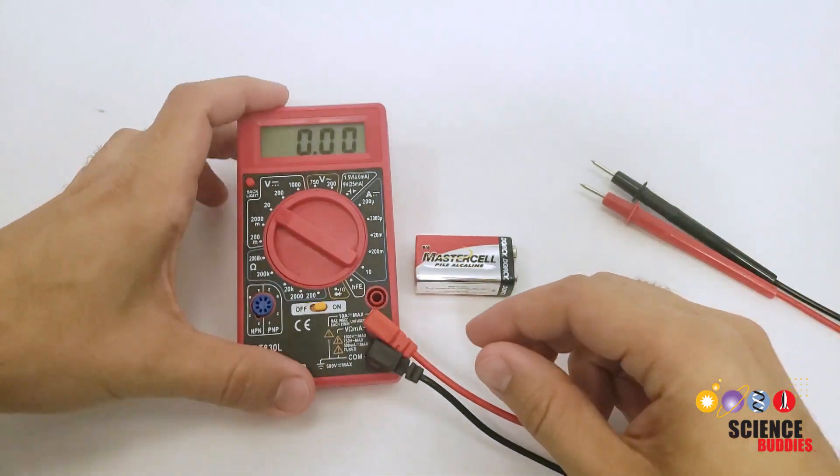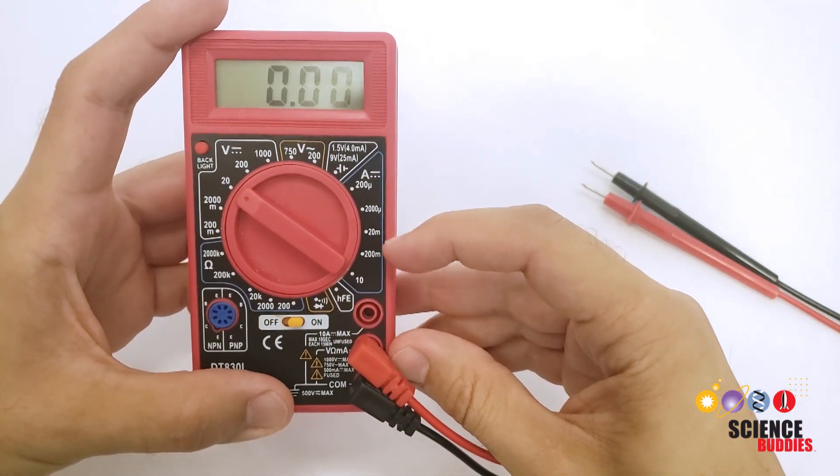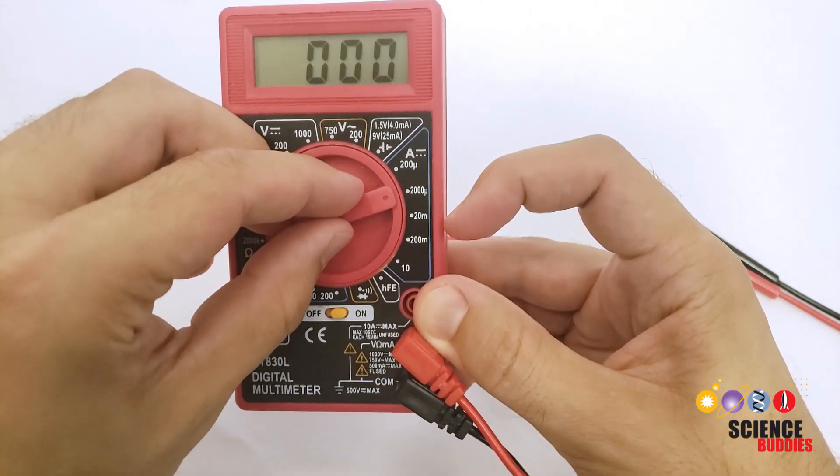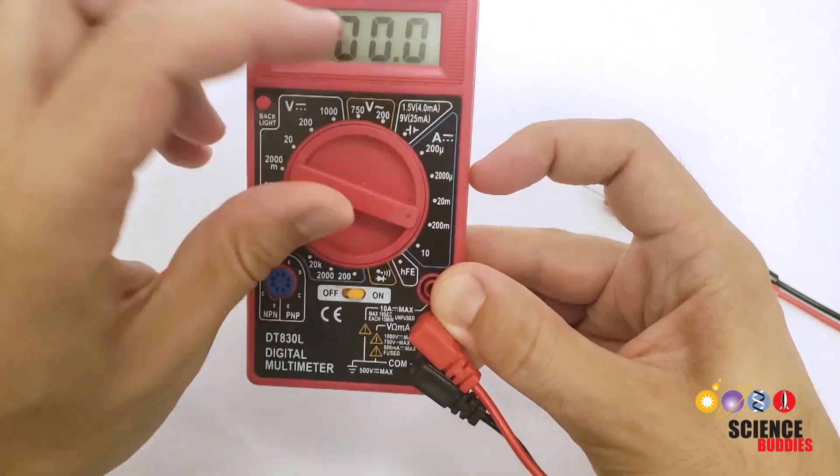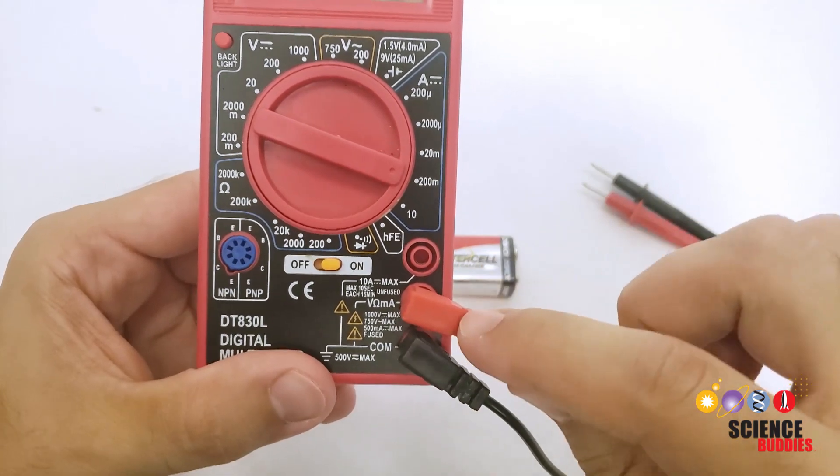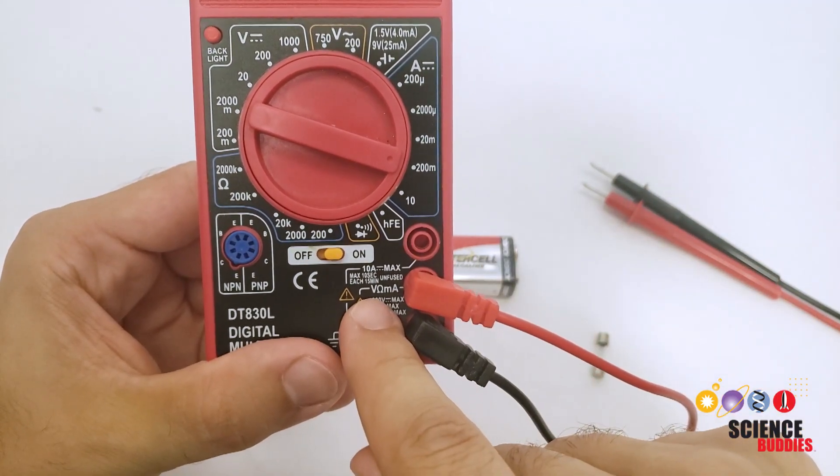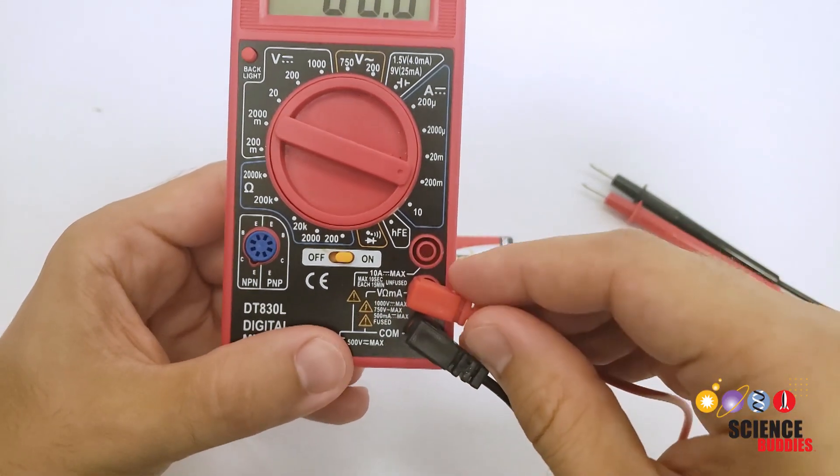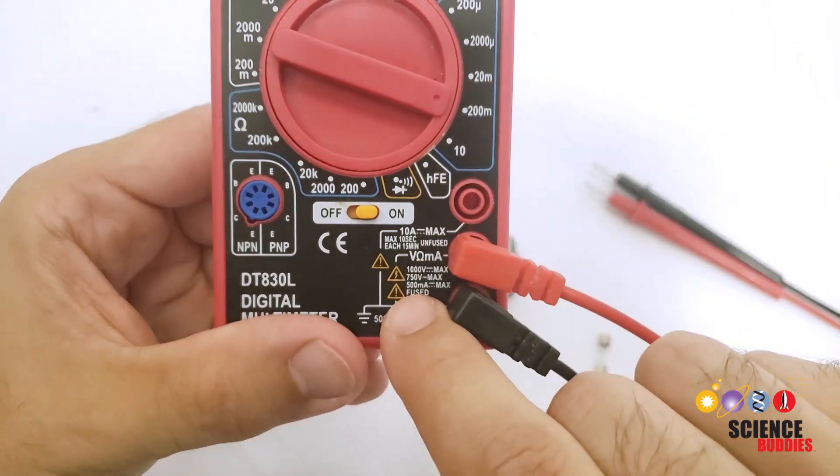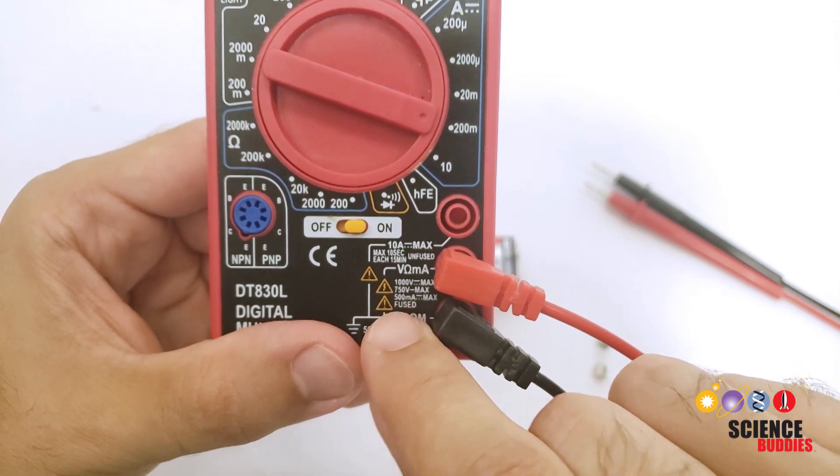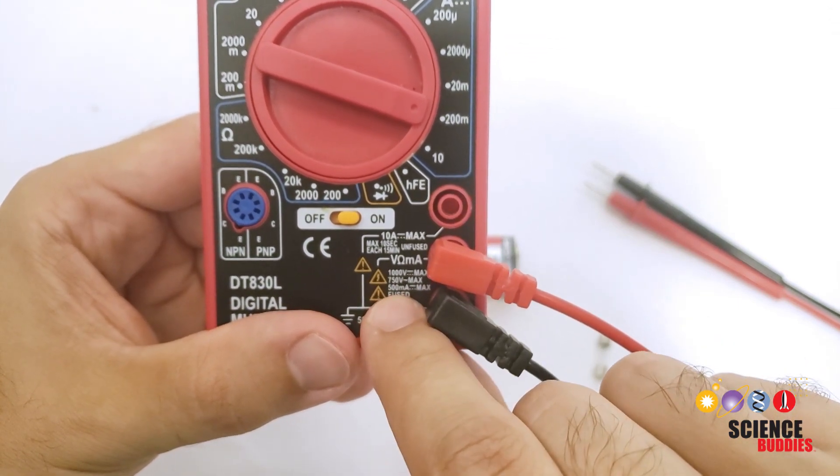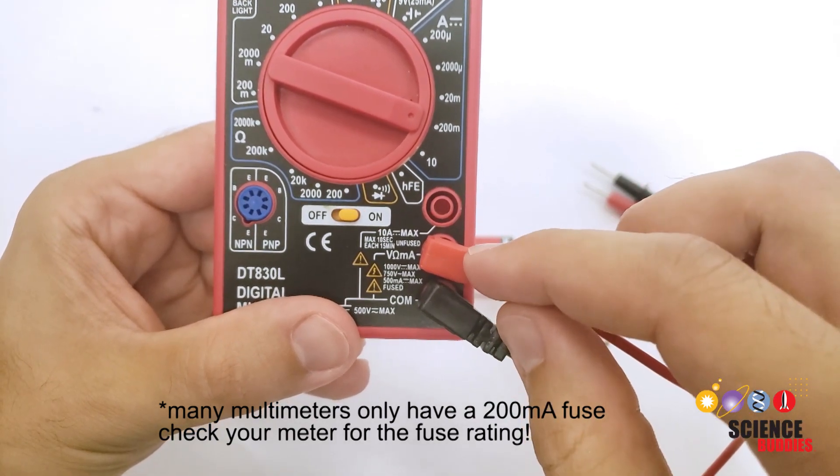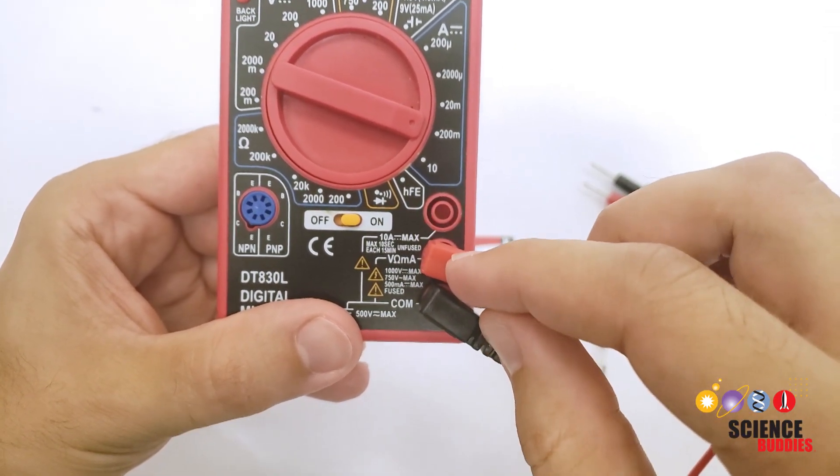The problem arises when you have your multimeter set to measure current, especially the lower current settings in the micro or milliamp range that you see over here on the right side of the dial, and you have the red probe plugged into the port labeled V for volts, omega for ohms, and milliamp for milliamps. That is a small amount of current, and as you may be able to see on the label here, that port has a 500 milliamp fuse, meaning if more than 500 milliamps of current flows through this port, it will blow that fuse.